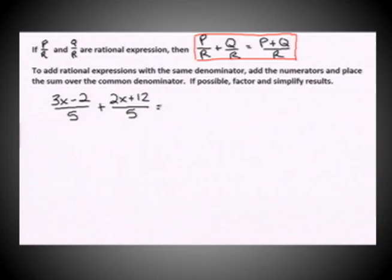So in this case, we have 3x minus 2 plus the polynomial 2x plus 12. Now we could also put that first binomial in parentheses as well. And you combine those over the common denominator 5.